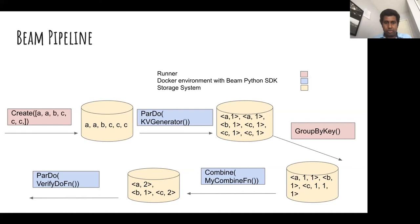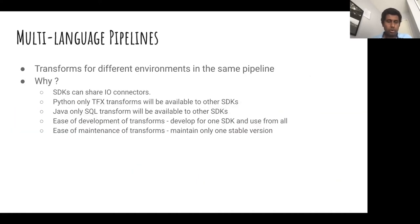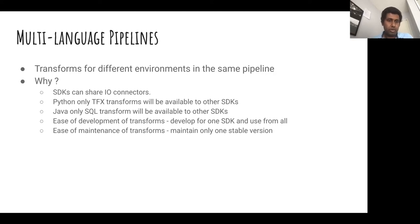One thing to note is that all the SDK steps were executed in a single environment. When you take a Beam multi-language pipeline, the difference is that there can be more than one SDK environment in the same pipeline — transforms could get executed in more than one SDK environment. So why do we need this? There are multiple reasons. One good reason is that SDKs can share IO connectors.